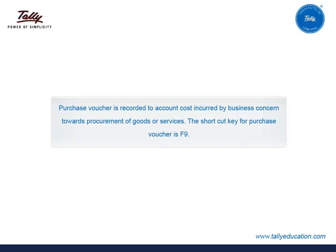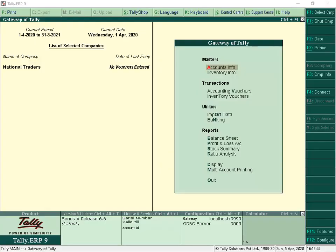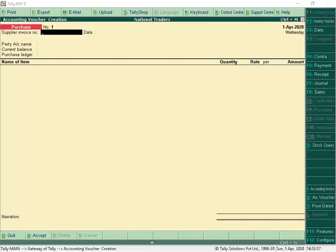Purchase Voucher is recorded to account for costs incurred by a business concern towards procurement of goods or services. The shortcut key for Purchase Voucher is F9. In Tally ERP 9, purchase and sales vouchers can be recorded in three modes. For Voucher Mode, click Ctrl+V as Voucher.